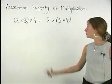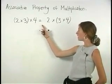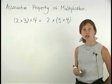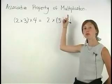The problem 2 times 3 times 4 equals 2 times 3 times 4 demonstrates the associative property of multiplication.